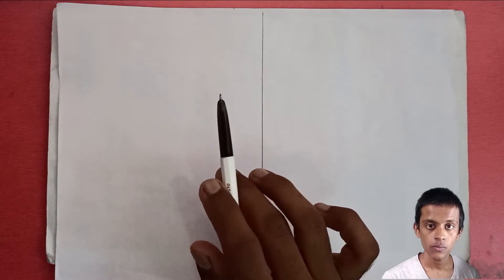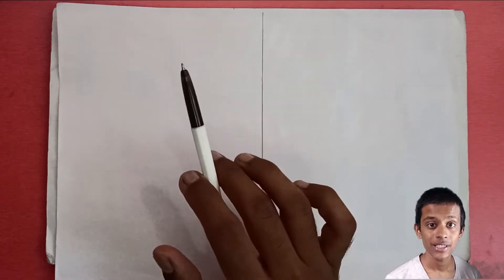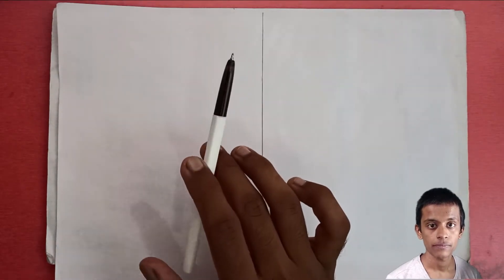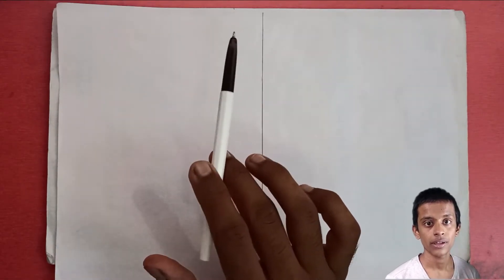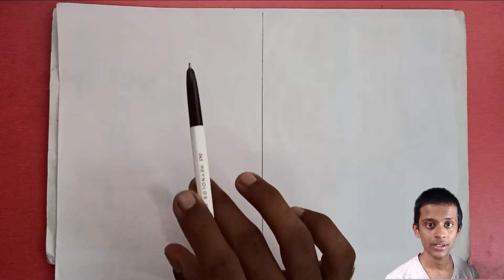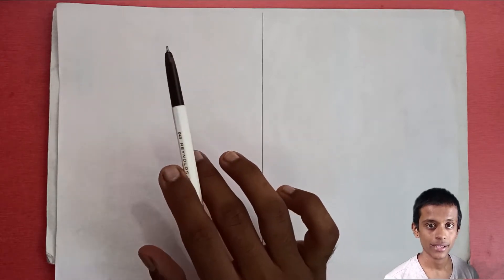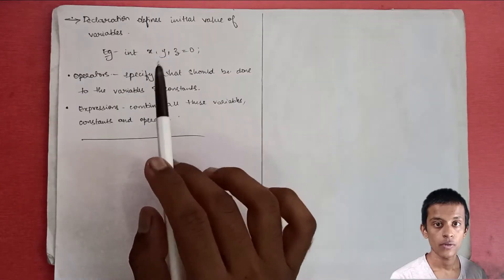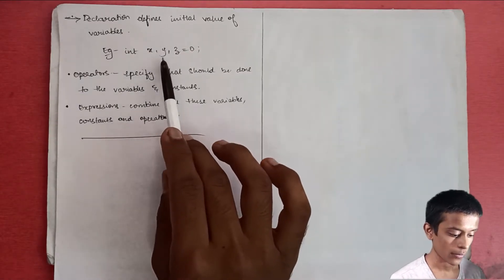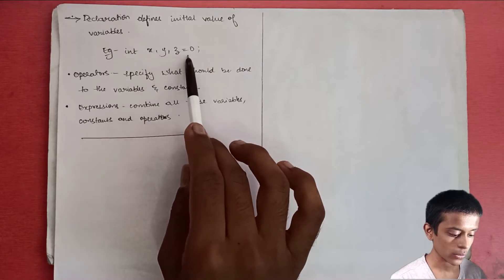The declaration you write sometimes also defines the initial value of the variable. For example: 'int x, y, z = 0' — here you are defining z's initial value to be equal to 0.